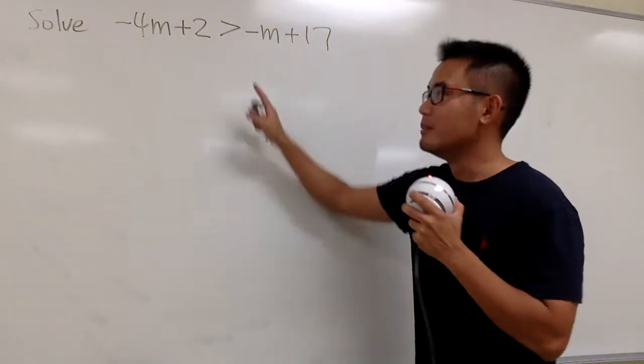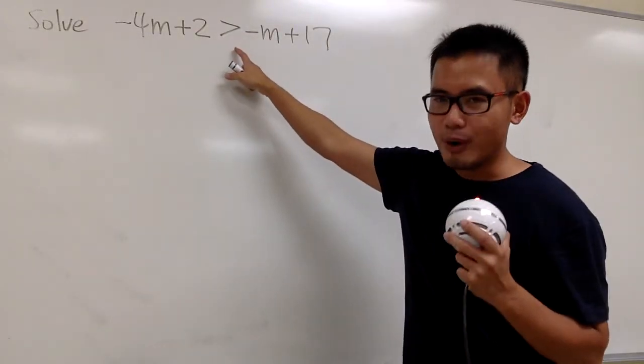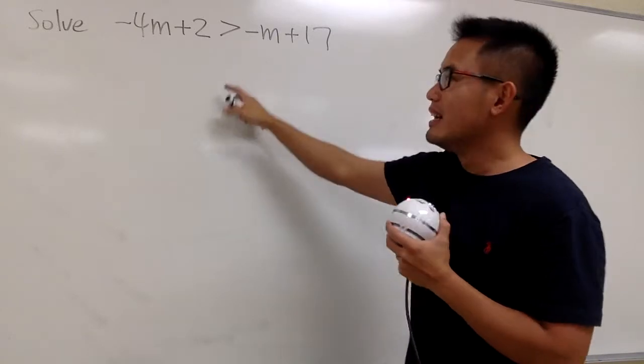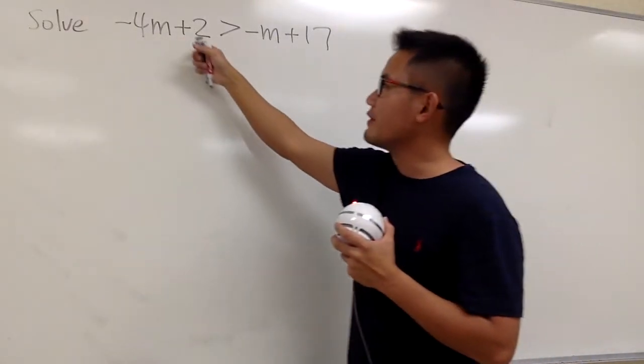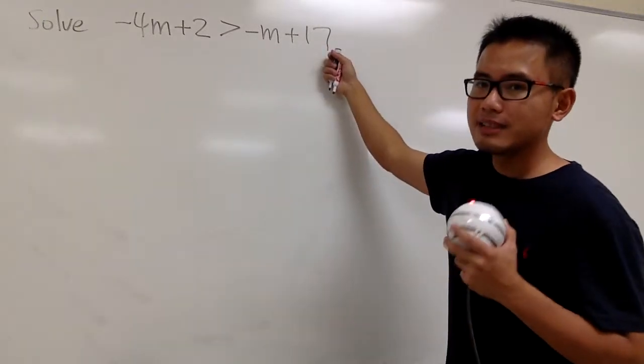Okay, we are going to solve this inequality, because here we have a greater than symbol, so this is an inequality. And as we can see, we have the m on both sides. Likewise, we have the numbers on both sides, right?